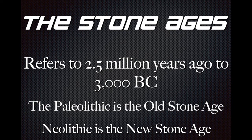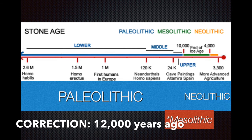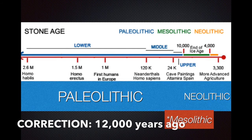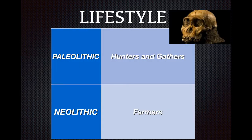The Paleolithic, the Old Stone Age, is roughly 2.6 million years ago all the way up to just about 24,000 years ago. This is considered classically as the Stone Ages, and the time after that is the Neolithic times. We're going to compare and contrast these two time periods.